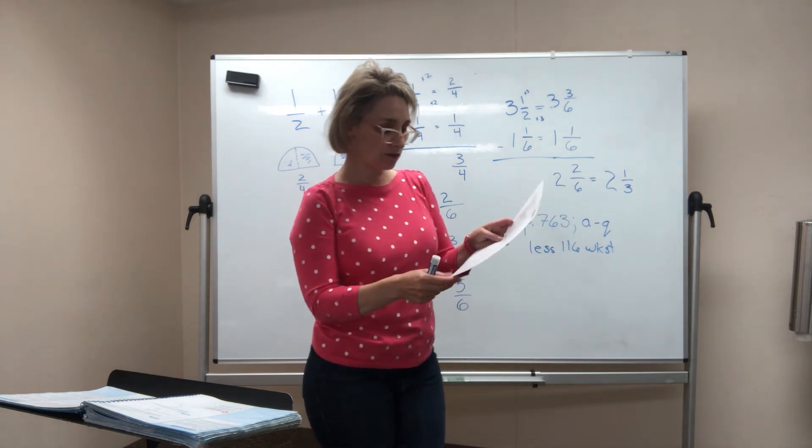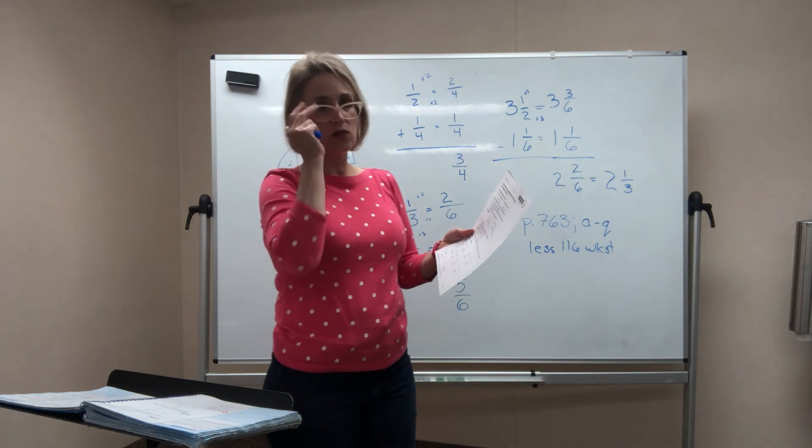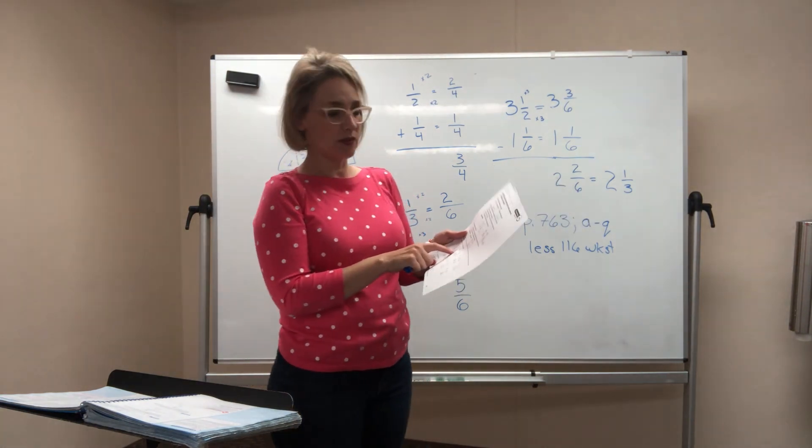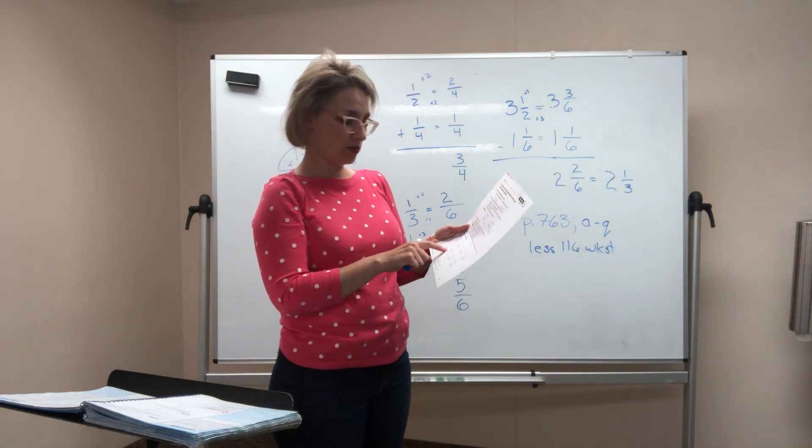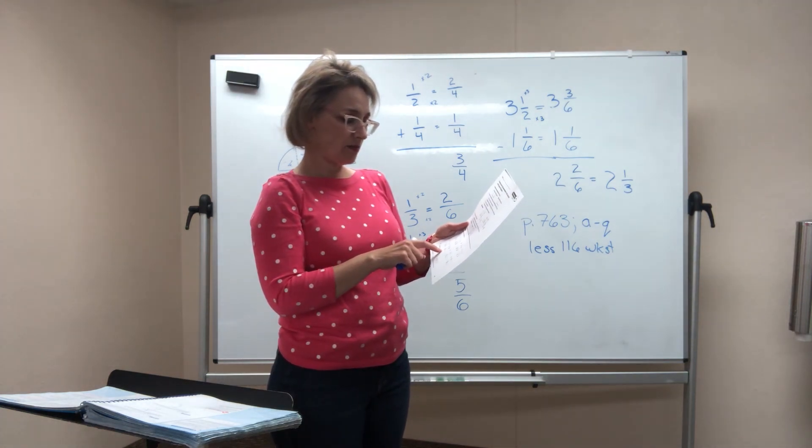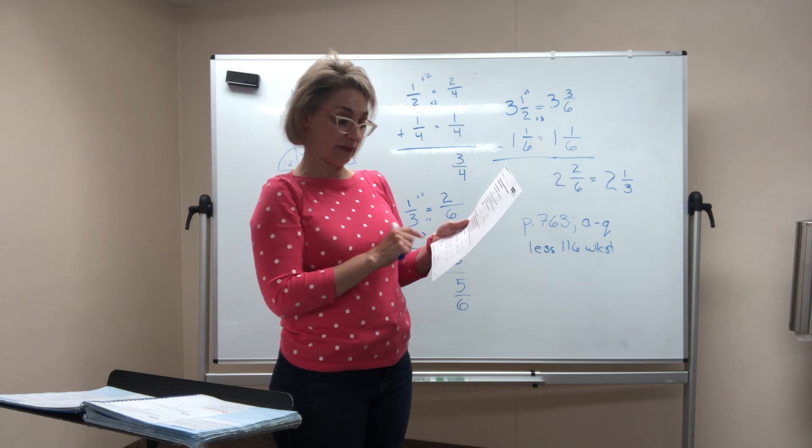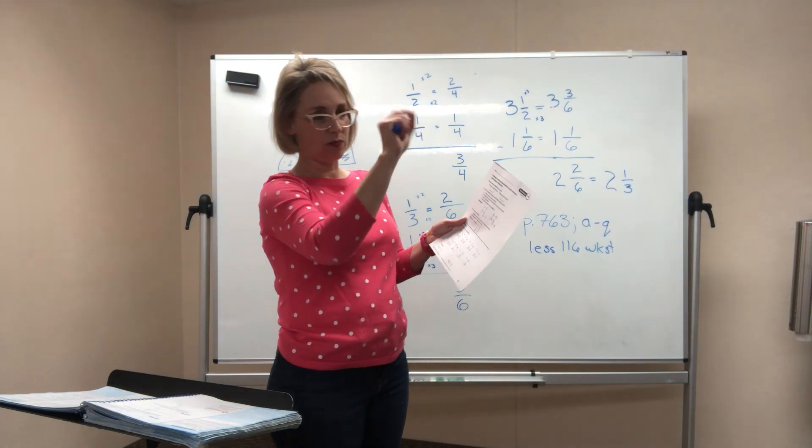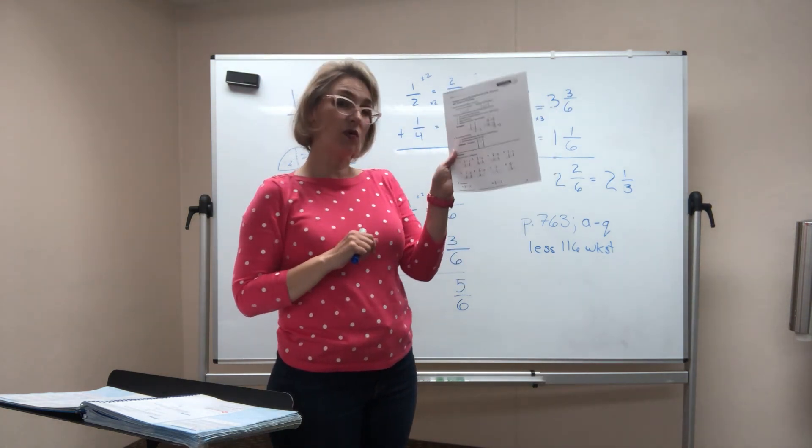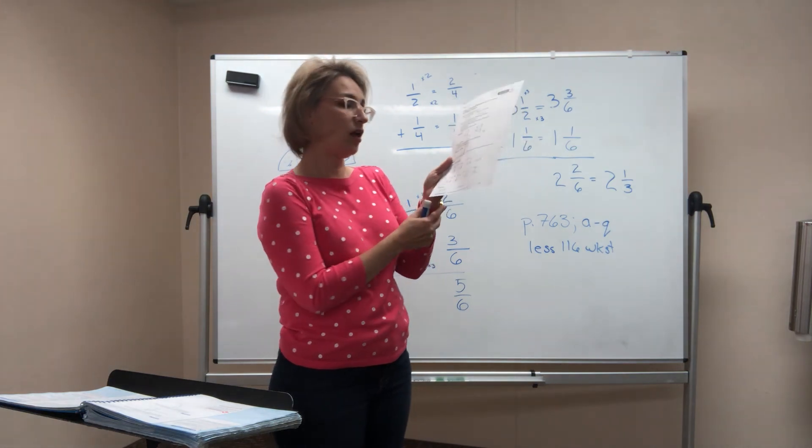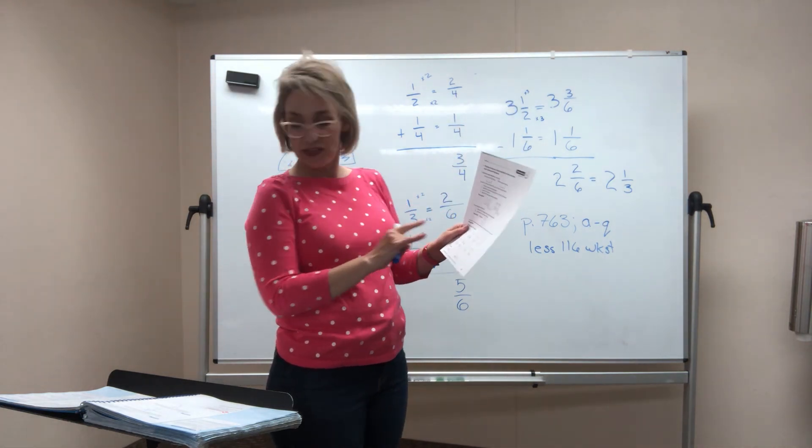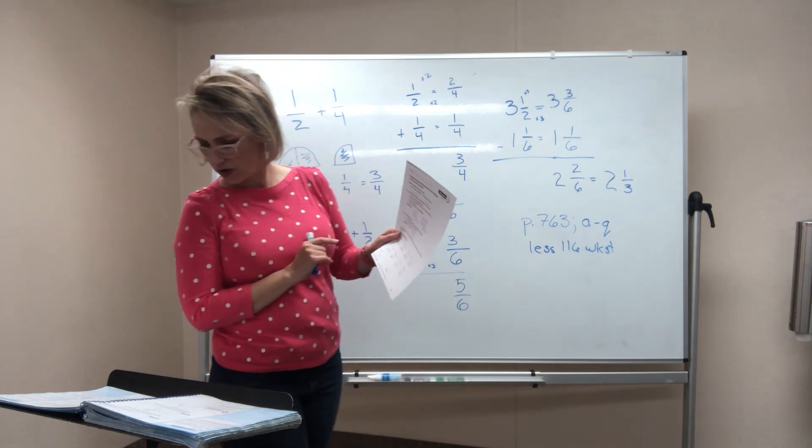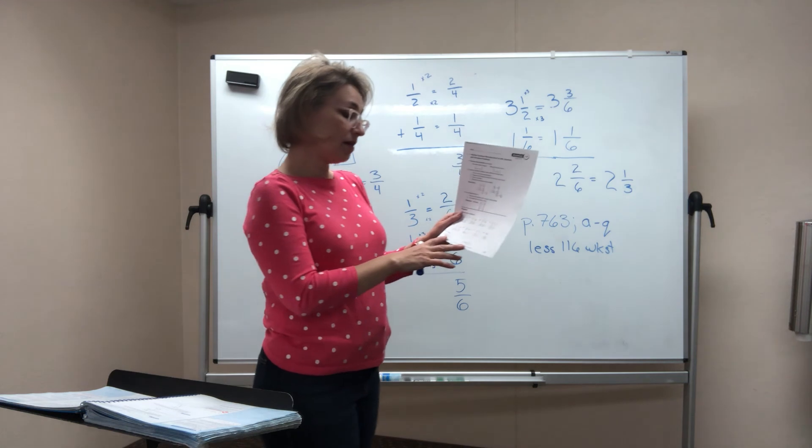That one has 10 more problems on it for you. I recommend doing the worksheet first because they give you some prompts to help you figure out what the least common denominator is for the numbers. They give you help clear up through number six, and then on seven and eight they give you the little fraction bar to write it on and everything. So do the worksheet first. That's going to help you.